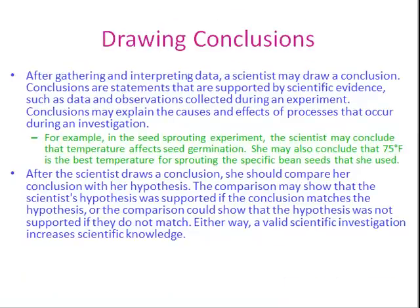After gathering and interpreting the data, a scientist may draw a conclusion. Conclusions are statements that are supported by scientific evidence, such as data and observations collected during an experiment. Conclusions may explain the causes and effects of processes that occur during an investigation. For example, in our seed sprouting experiment, the scientist may conclude that temperature affects seed germination, and that 75 degrees Fahrenheit is the best temperature for sprouting that specific bean seed.